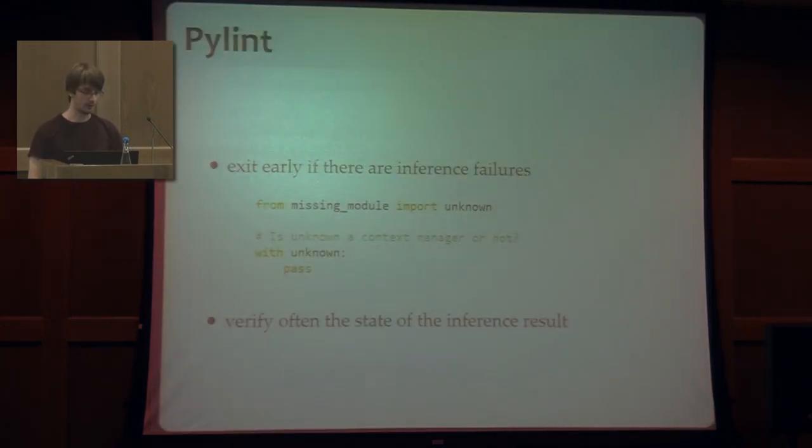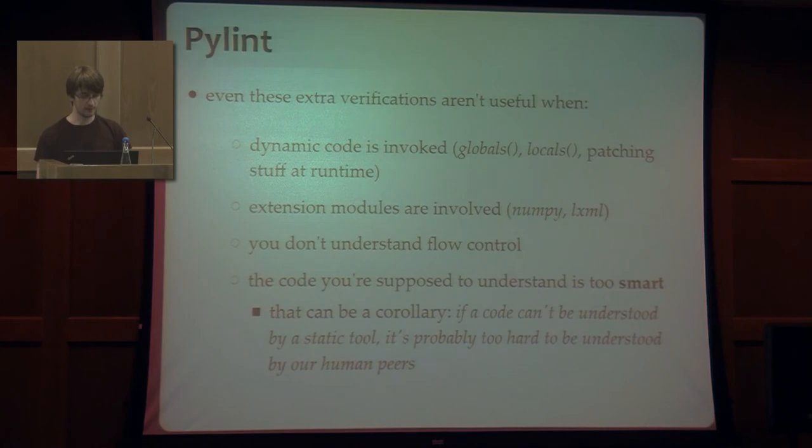Or if we have inference errors, as it is in this example, we don't know what missing module is. We don't know what unknown is. So it's better to assume that this code is going to work rather than assuming that it's not going to work. And this means that we are also verifying very often the state of the inference. And even these checks and verifications aren't actually useful when we have to deal with stuff like globals or locals. Or we have to deal with extension modules. Basically because extension modules can't be analyzed statically. We have to import them and do a bunch of things with them to transform them to ASTs in order to work with them.